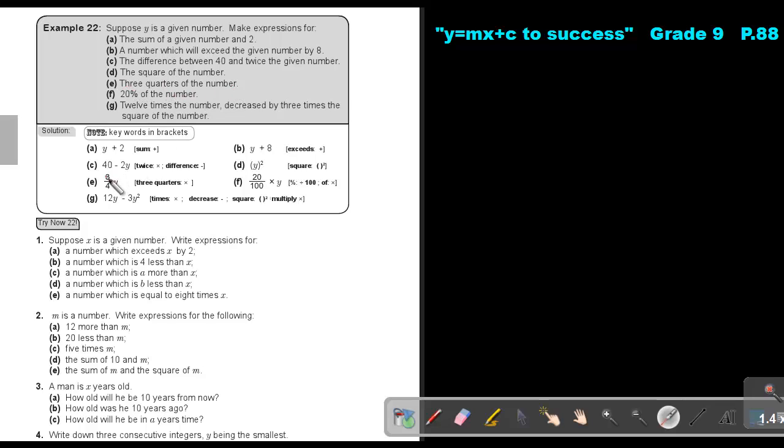Three quarters of the number, so take three quarters and multiply it with the number. And remember you can also write it as 3y over 4. And then number f, 20% of the number, so remember percentage is out of 100 times y. So you can also write it as 20y over 100. Because that's over 1, so the y will be on top. And then the next one, 12 times the number, so 12y, decrease by 3 times the number, decrease minus 3 times the square of the number. And that's y squared. So it's 12y minus 3y squared. And that's how I put that into algebraic expressions.